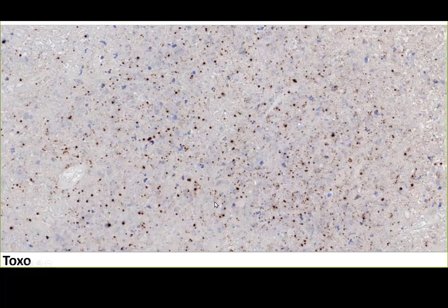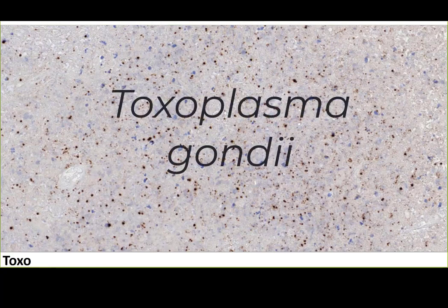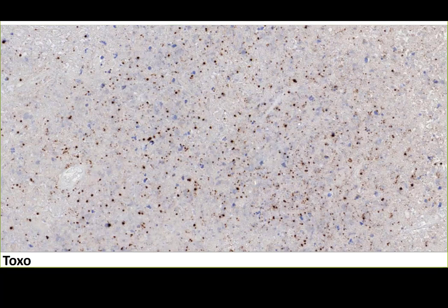This is the patient's result. All of these brown little dots here are tachyzoites and the Toxoplasma gondii organism. This is a very active inflammation. Usually when you see toxo it's maybe one or two positive organisms in a high power field, but here there are many many in a low power field. So this is a very exuberant infectious process.